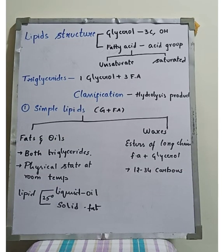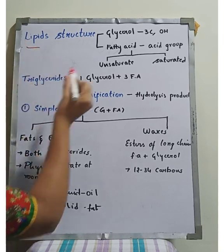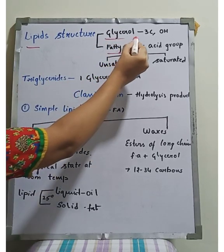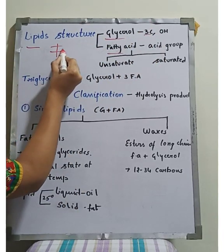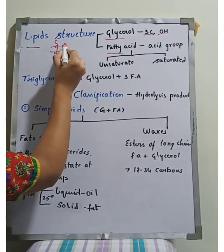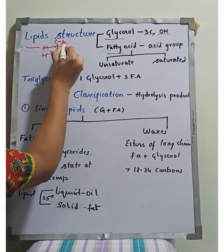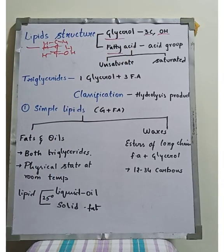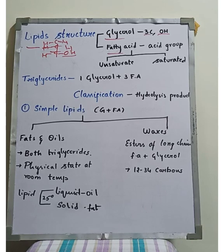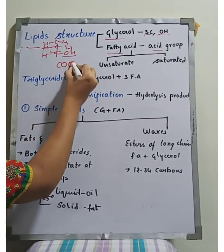Now let's look at the structure of lipids. There is a glycerol molecule and a fatty acid molecule in a lipid. The glycerol molecule has 3 carbons, each with an OH group attached. The fatty acid molecule contains an acid group, specifically a COOH group. This is the basic structural composition of a lipid molecule.